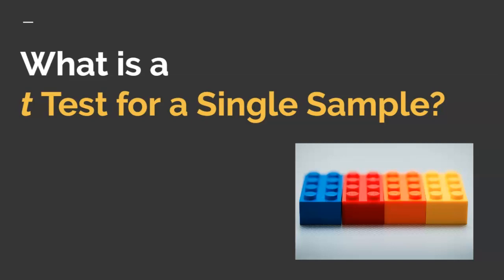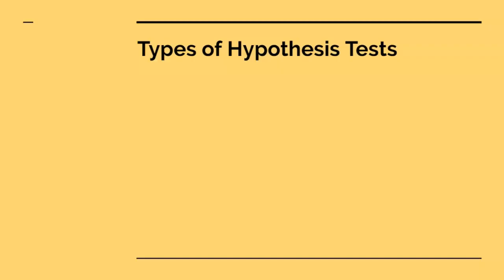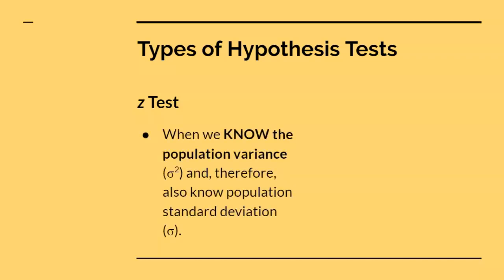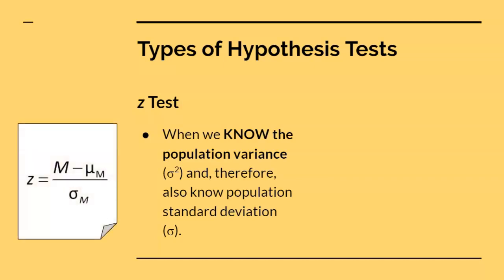This video will explain how researchers can do that. There are many different types of hypothesis tests. So far, you have learned about the z-test. The z-test allows us to test a hypothesis about a population on a specific sample. We calculated a z-score for the sample mean. In order to calculate that z-score, we knew population variance, sigma squared, and therefore we also know population standard deviation, sigma.